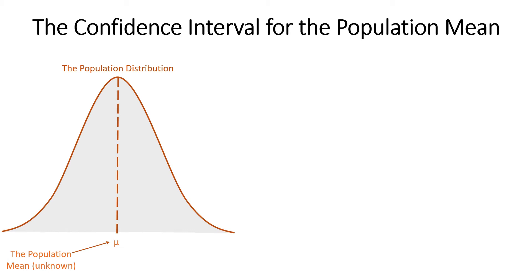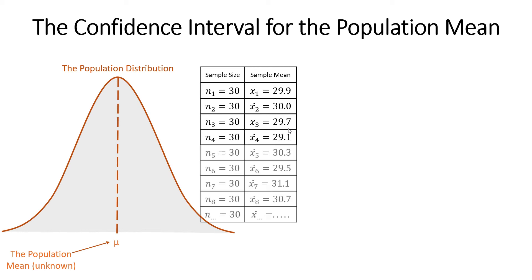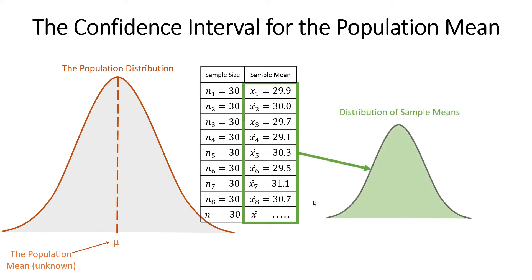Let's imagine that we took a sample of 30 units from this population and calculated a sample mean value of 29.9 — this is x-bar, our sample mean. Then let's say we did that again: we took another 30 samples and calculated another sample mean of 30. We could do this again and again, on and on down to infinity, and we would have all these individual sample mean values calculated within these different samples. We could take these sample means and form them into their own distribution.